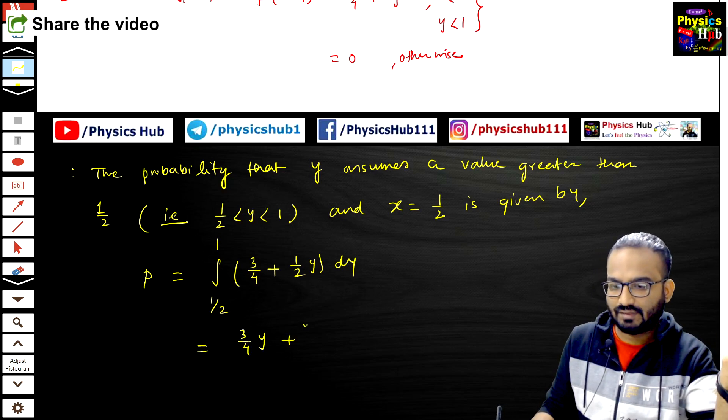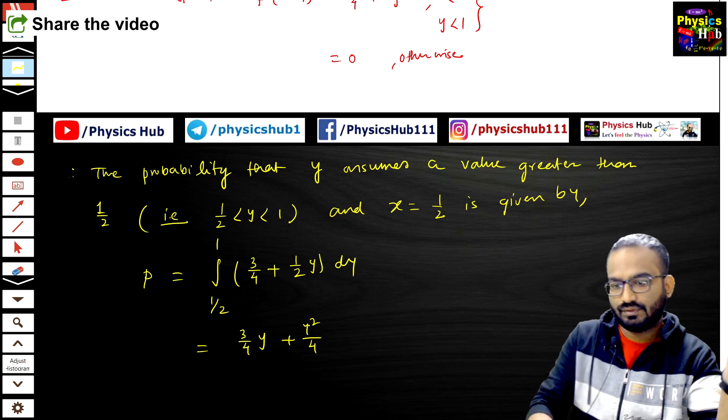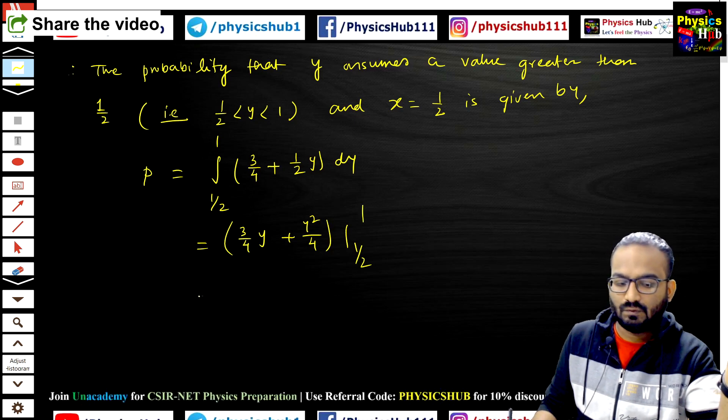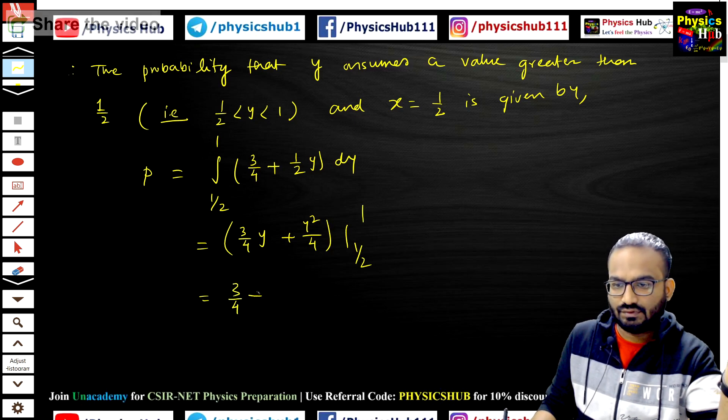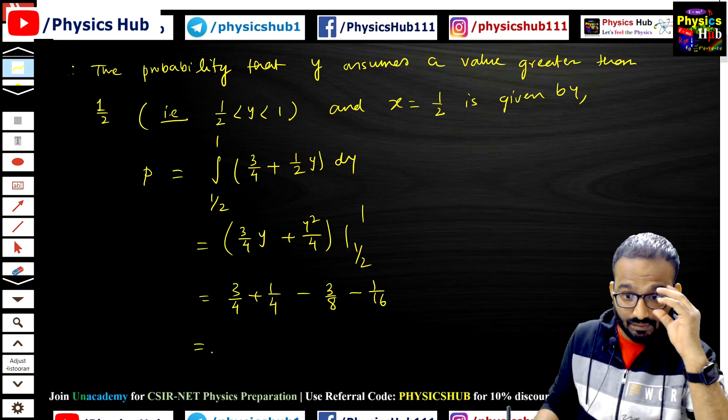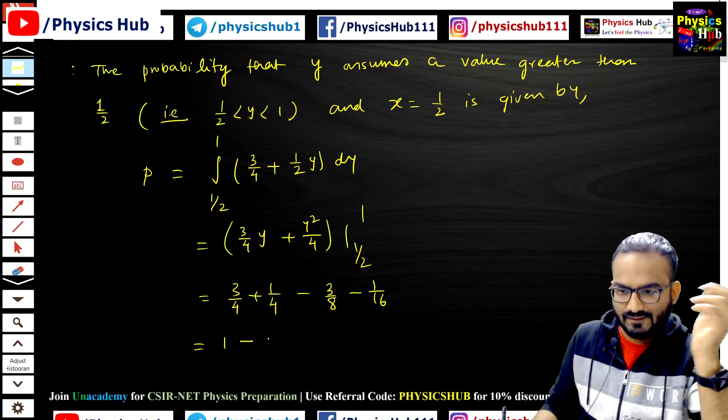times y plus y squared upon 4, and this integration has to be evaluated between 1/2 to 1. So 3/4 plus 1/4 minus 3/8 minus 1/16. If you calculate this, you get 1 minus